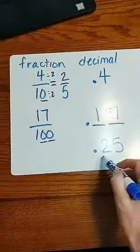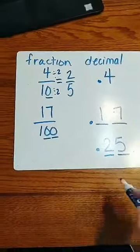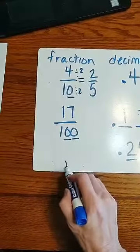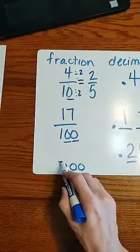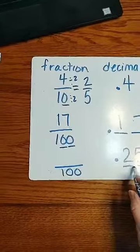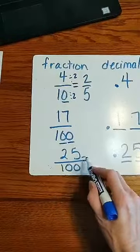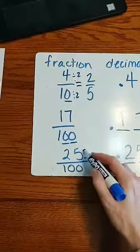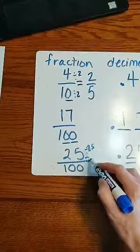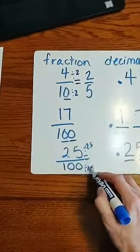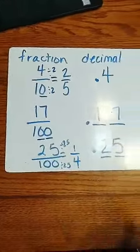and I want to write it as a fraction. I have two spots in my decimal. So that means I'm going to have two zeros after my one down here, 100. And then I'm going to put my decimal number on top, which I can then reduce, and I can divide those by 25. So that's actually one-fourth. There's my reduced.